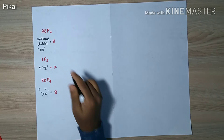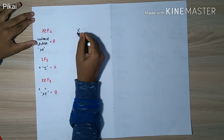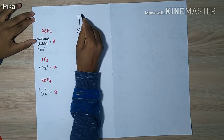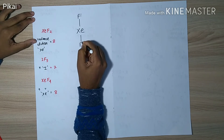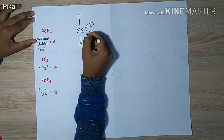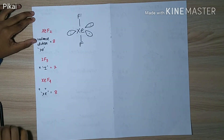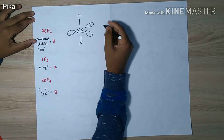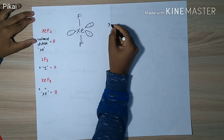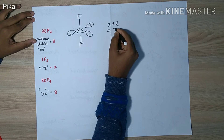Next is XeF₂. Xenon is the central atom with eight valence electrons. It shares two electrons with fluorine atoms and we are still left with six electrons, forming three lone pairs. The formula — three lone pairs plus two bond pairs — gives five.